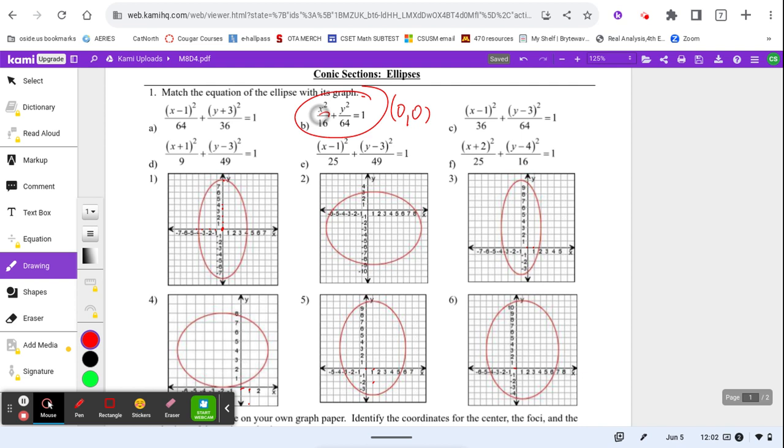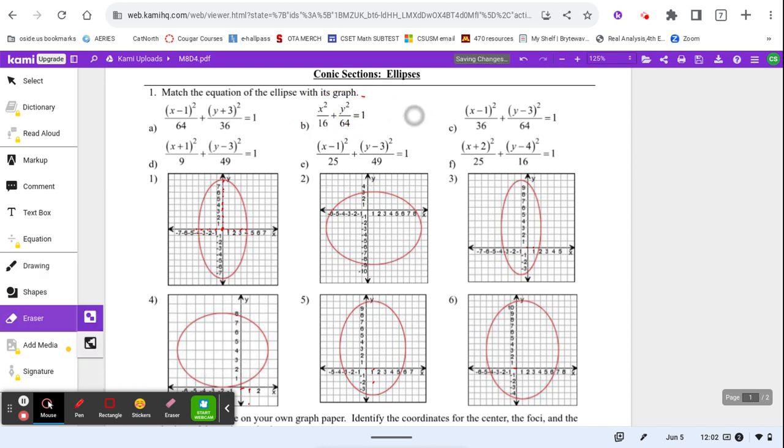Let me check: does it go a distance of 4 in the x direction? 1, 2, 3, 4 right, 1, 2, 3, 4 left, yes. And does it go a distance of 8 in the y direction? 1, 2, 3, 4, 5, 6, 7, 8. So that one is my graph. I would put a B here and then cross both of those off because they're used.